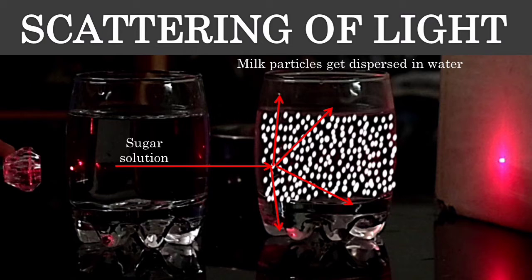Since a milk particle is tiny in nature, the reflection occurs to all directions, and this reflection that is happening to different directions is known as scattering.